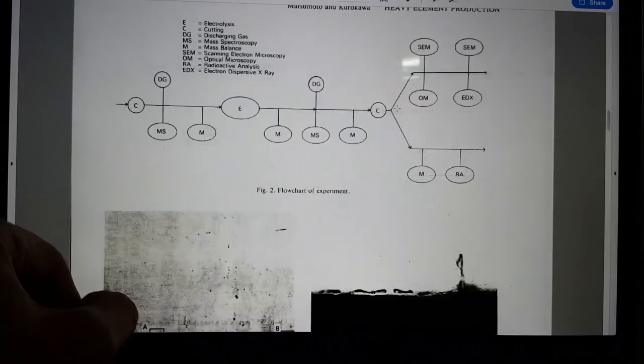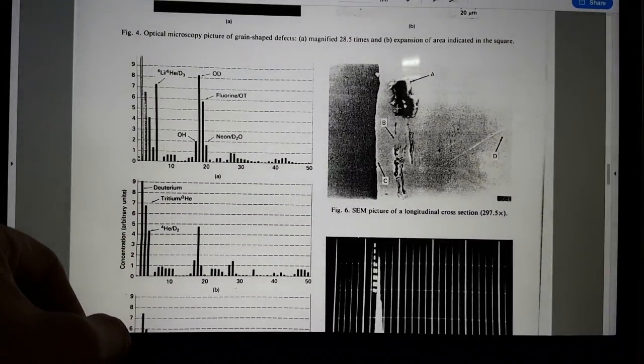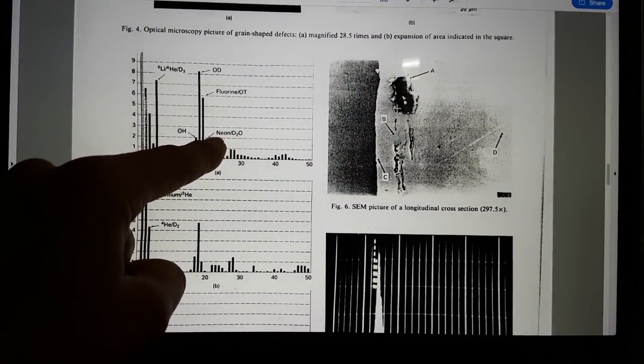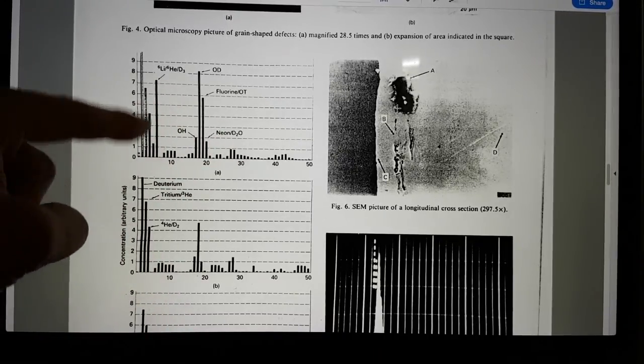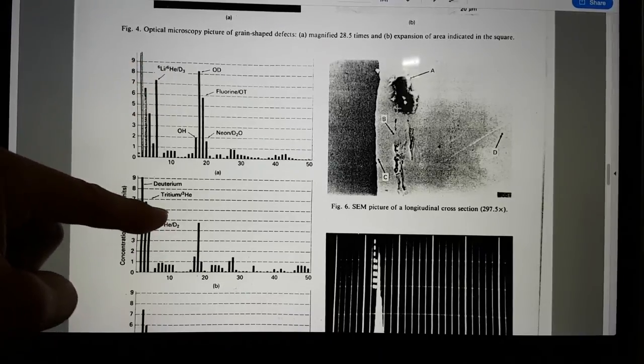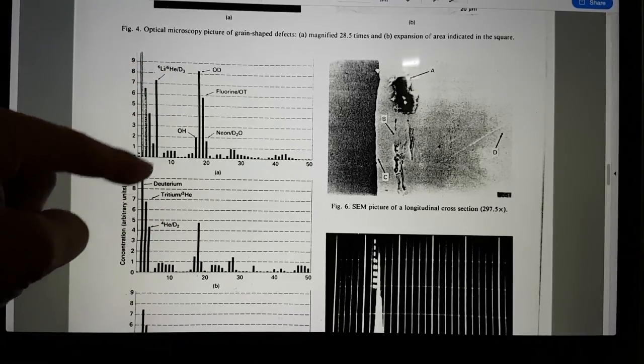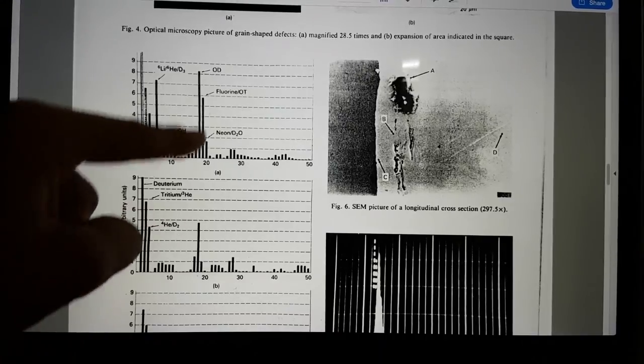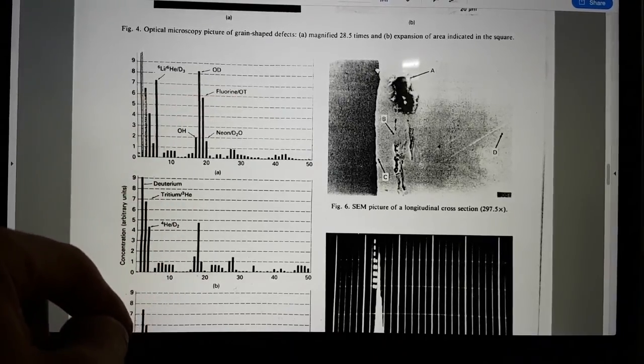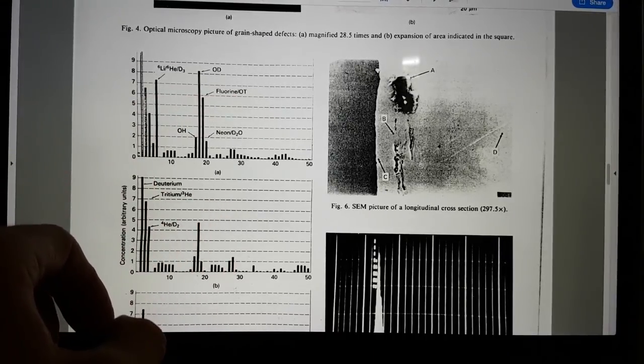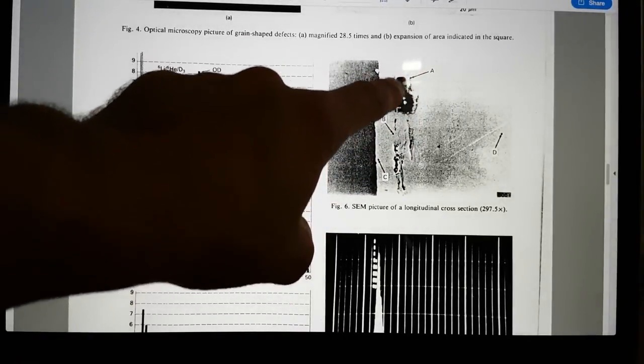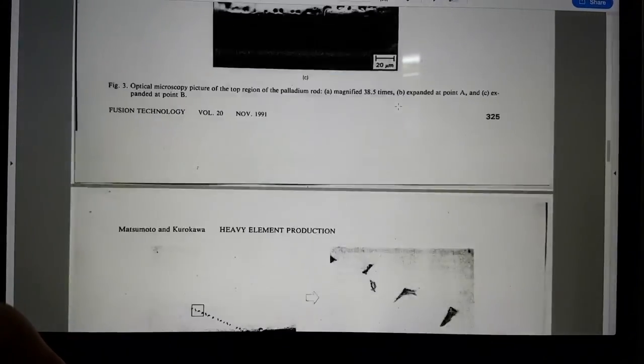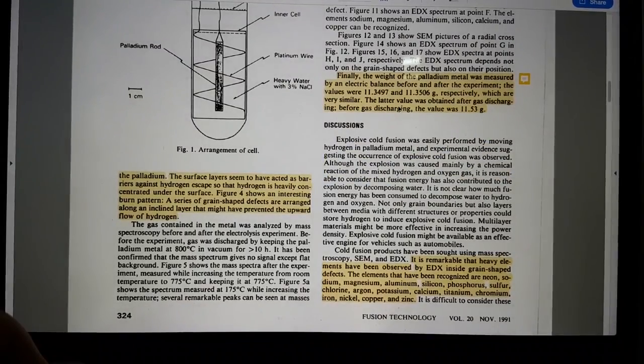Now he then goes on to talk about how they deloaded the material before by having it over 800 degrees C for 10 hours and so forth. And after the experiment they showed what they found by analyzing the gas that came out of that. So that's interesting because they found possibly neon and the production of lithium as well as tritium and also helium and also fluorine. So that's good from a residual gas analysis.